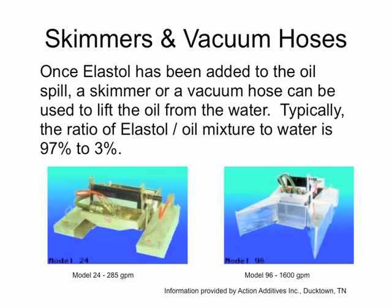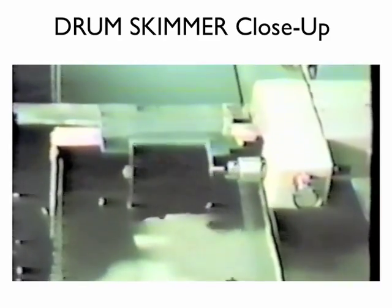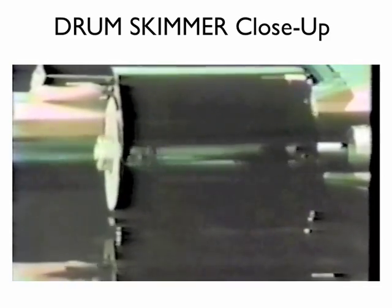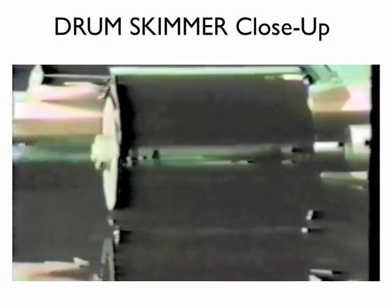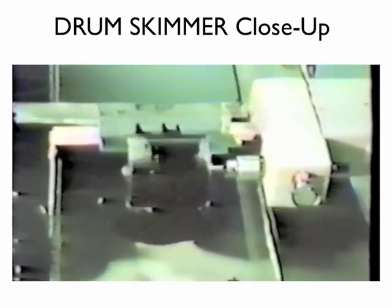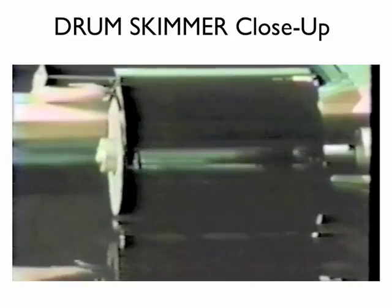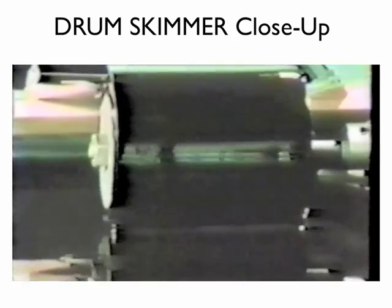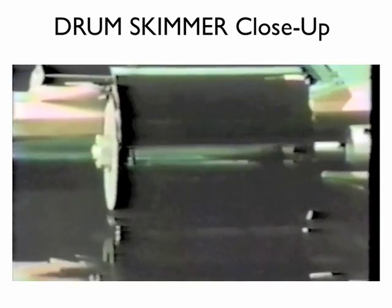Skimmers come in different sizes and pickup capabilities. The larger they are, the heavier they are, and the greater the pickup rate. This is an example of a skimmer with a cover removed. Because oil has a slight polarity, the skimmer surface is charged, improving the rate of oil pickup. The addition of Elastal, because of its long-chain polymer nature, increases the rate of oil pickup over oil alone and eliminates any water.